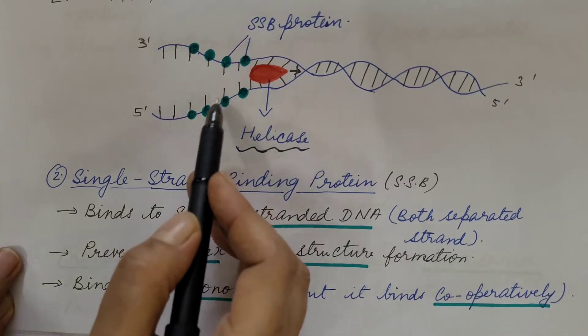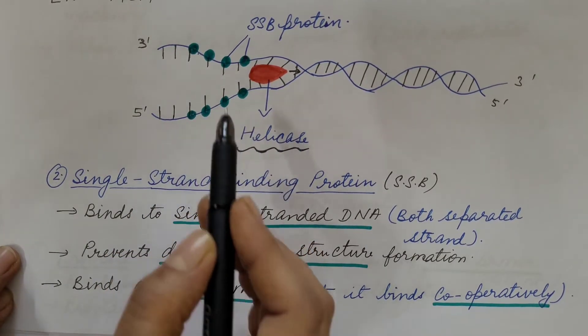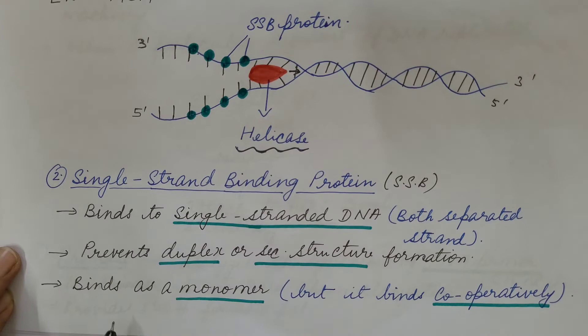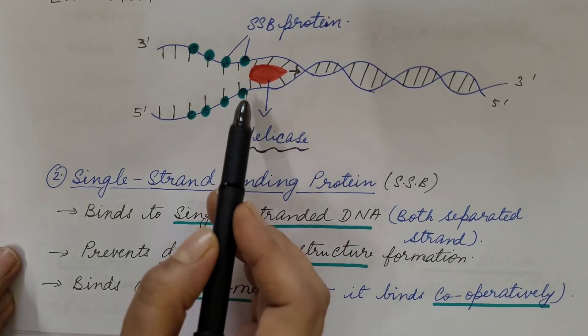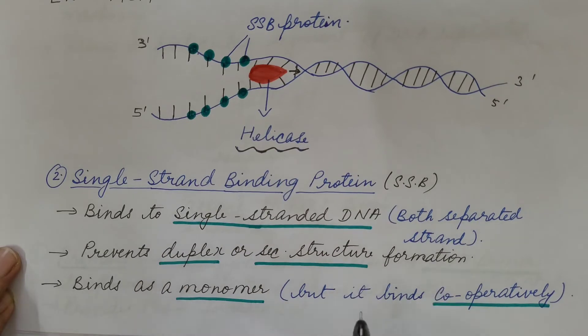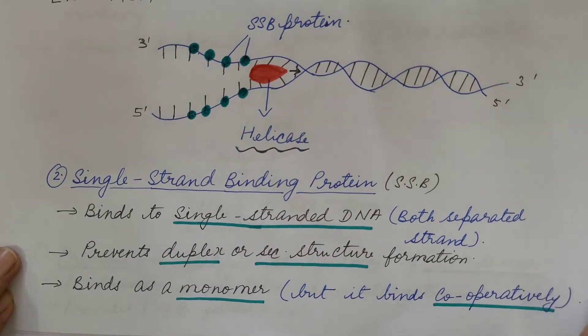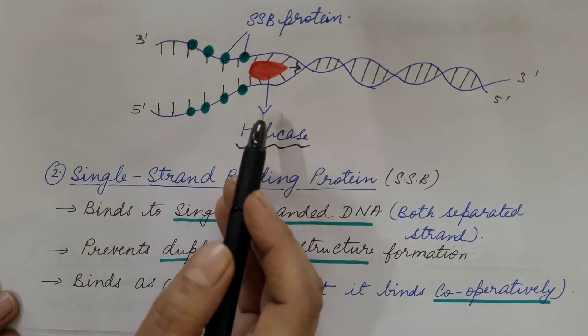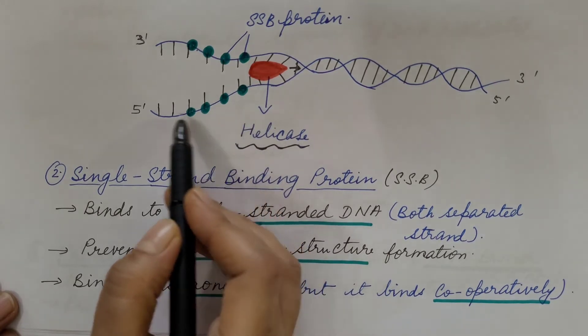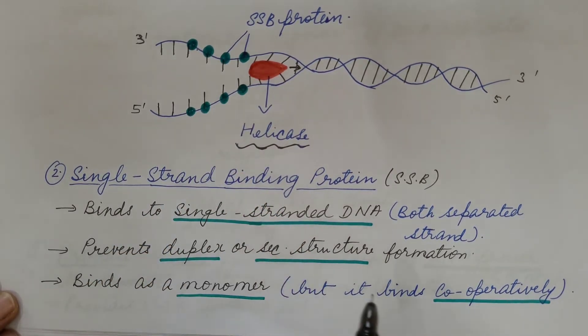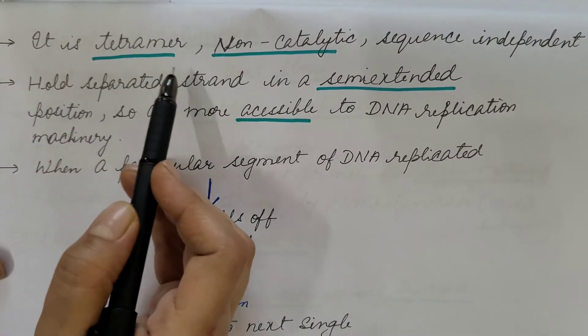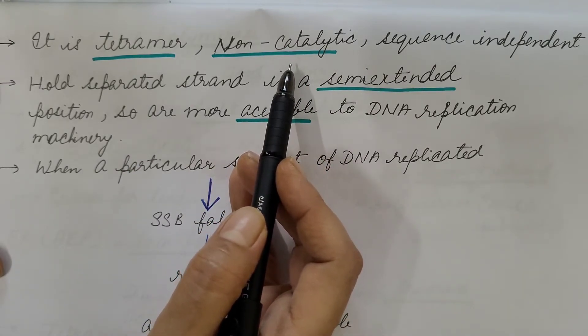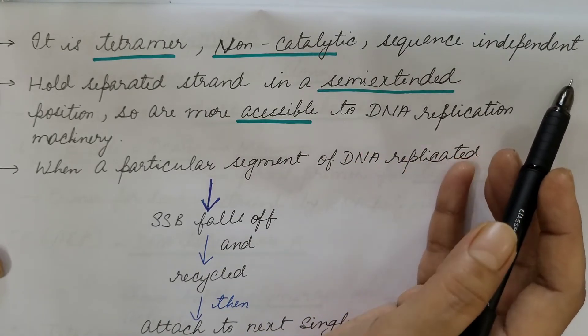When these bind to the single strands of the DNA, it does not allow the rewinding or the formation of the double helical structure. It binds as a monomer, but it binds cooperatively. This means binding of one single strand binding protein facilitates the binding of more single strand binding protein monomers to the same strand. So we can say that it is a tetramer and it is non-catalytic. It does not show any enzymatic activity. Also, it is sequence independent. It can bind to any sequence in the single strand of the DNA.